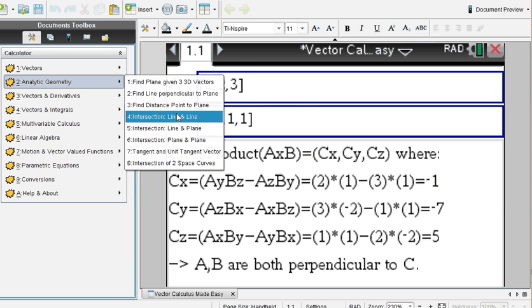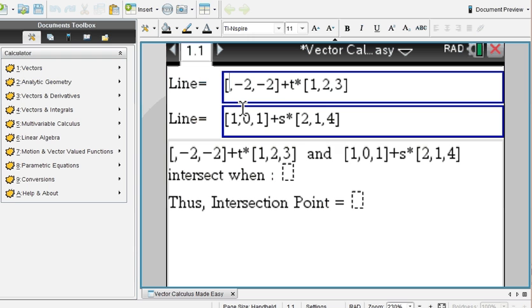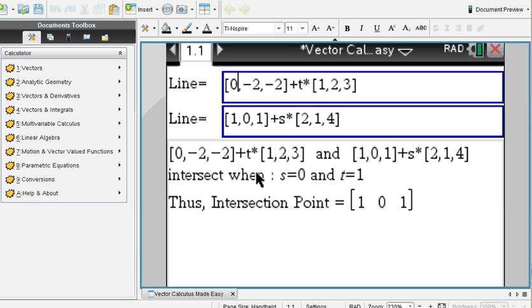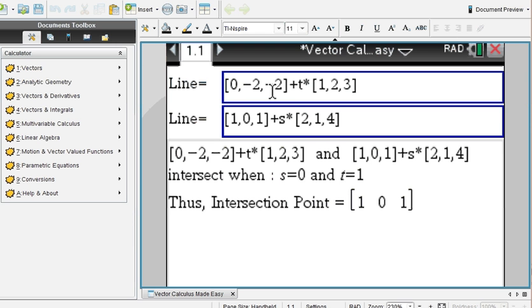Analytic geometry. If you are given two lines and you want to find out where they intersect or if they intersect, in this case these two lines have an intersection point at one, zero, one. And that occurs when the second line has an S value of zero and the first line T value of one. Of course, if you change values you may not get an intersection point. It can be skewed.